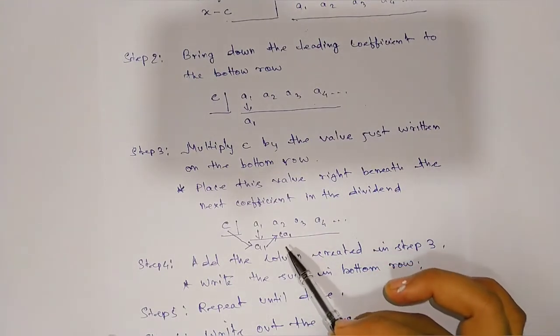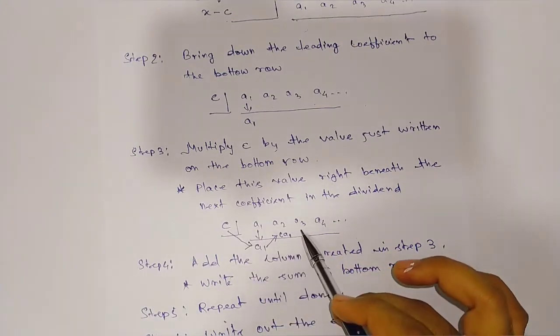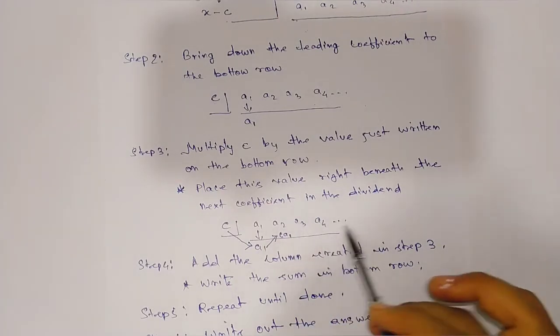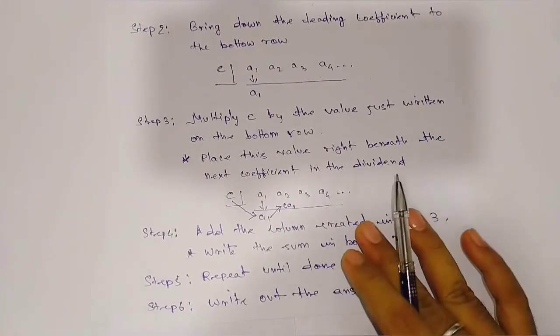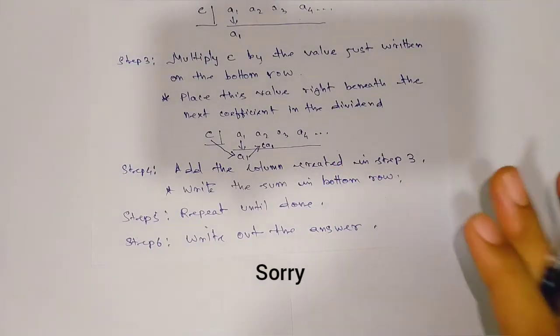Multiply this value with C again. Whatever result you get, substitute it beneath this column and proceed until complete. Now let's see an example.